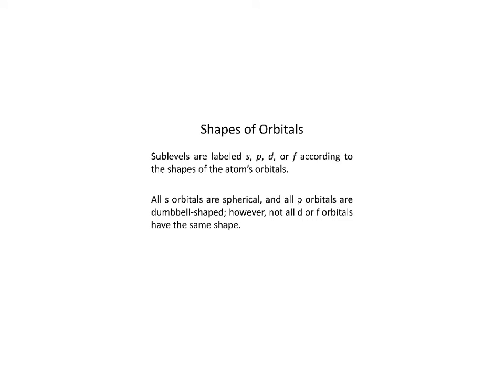Shapes of orbitals: sublevels are labeled S, P, D, or F according to the shapes of the atom's orbitals. Every sublevel contains orbitals — the paths that electrons actually take on that sublevel. Think of it this way: on the first floor, the first energy level, there's only one room, and it can only fit an S orbital, which is a circle — electrons can only go around in a sphere. On the second floor there are two rooms: one S orbital shaped like a circle, and one P orbital which is dumbbell-shaped. So electrons are either running around in the S room or the P room.